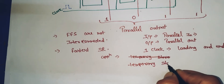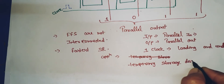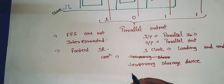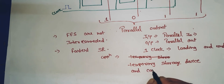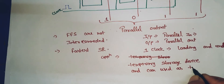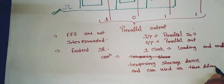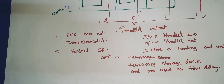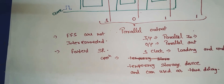PIPO is used as a temporary storage device and can also be used as a time delay. However, in comparison to serial-in serial-out or parallel-in serial-out shift registers, this is the fastest process.